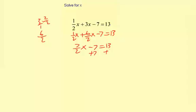Add 7 to both sides. Bring down the 7/2x. Negative 7 plus 7 makes 0, so we're going to have equals 13 plus 7, which is 20.